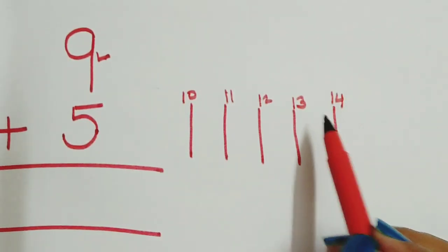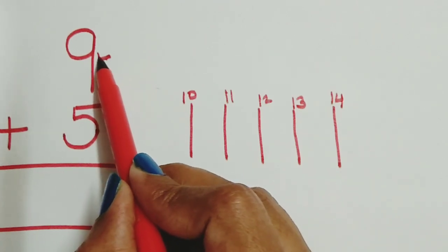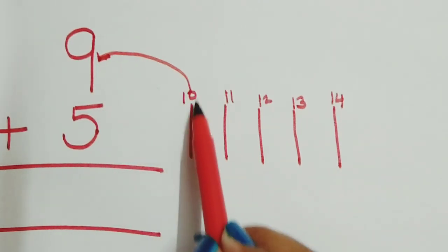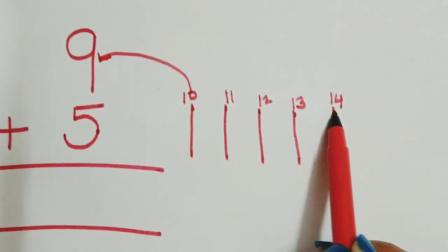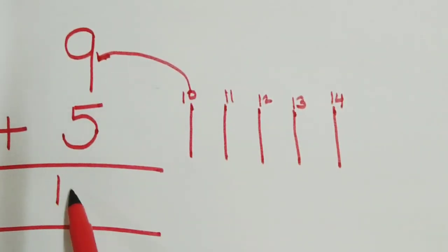Always do forward counting of the upper digit, that is 9: 10, 11, 12, 13, 14. And our answer is 14.